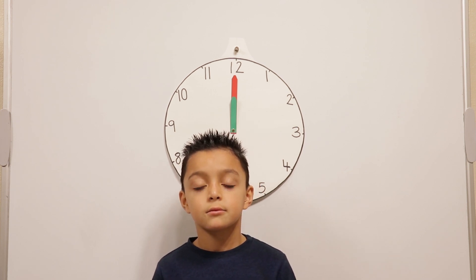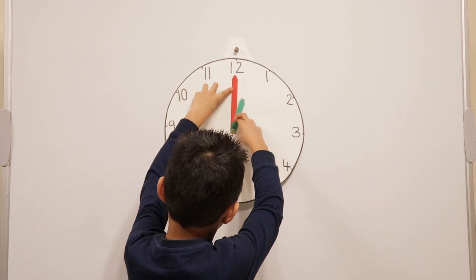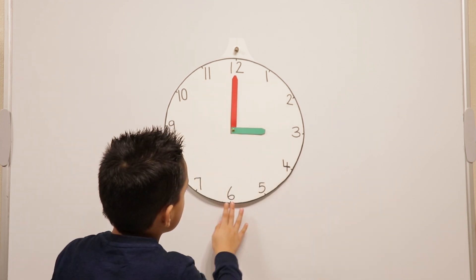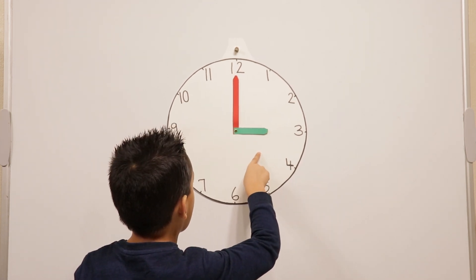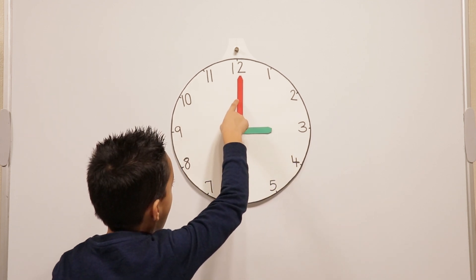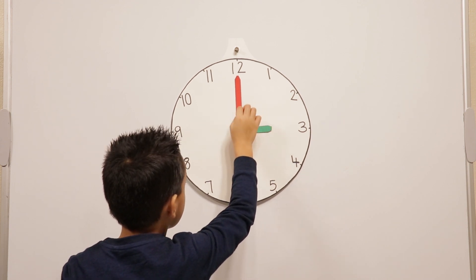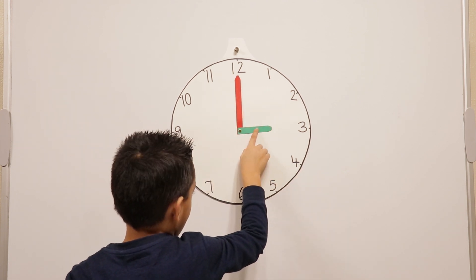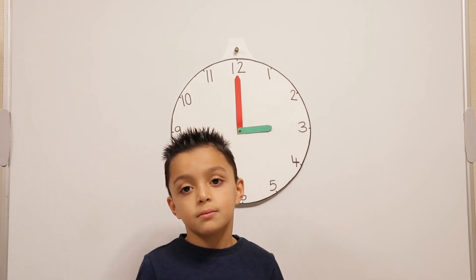Can you show us what three o'clock would look like on the clock? So the hour hand is our green hand here, the shorter hand, and the minute hand is our red one. When it's o'clock, the minute hand will always be pointing to twelve, and then the hour hand will be pointing at what o'clock it is. So that's three o'clock.